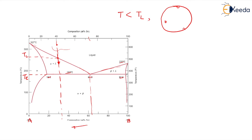As this region is rich in A, by default alpha will nucleate. Just below the liquidus line, the alpha is getting nucleated. And how will it grow? Very interestingly, the very common structure for growth is the dendrite — dendritic structure.